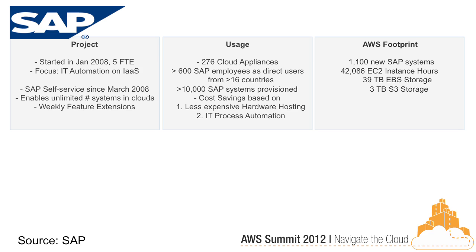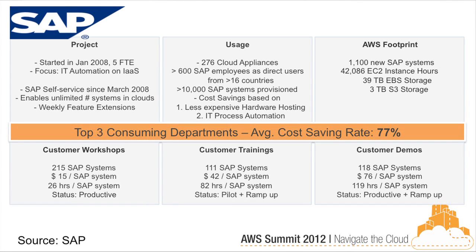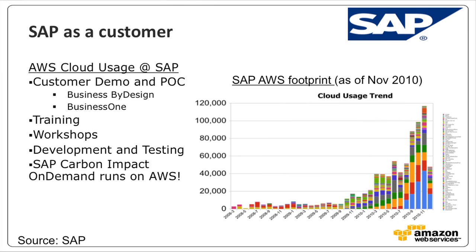We started with SAP back in 2008. They were focused on being self-service — not having to talk to us about anything. They said, 'Really, it's only an API?' We said yes. It's been a significant cost savings. They've got over 10,000 systems up and running, with way less hardware and time. They've told us it's 77% cheaper internally for test systems, since they only turn them on when needed — customer workshops, dev, demo environments. Turn them off when people go home.